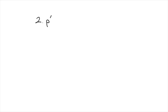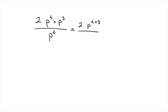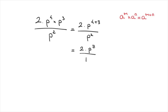Let's look at another example: simplify 2 times p to the power of 4 times p to the power of 3, all over p to the power of 2. It's best to work in steps. First, simplify the numerator — since everything is being multiplied, we get 2 times p raised to the power of 4 plus 3, all over p to the power of 2. This uses the multiplication rule: a^m times a^n equals a^(m+n), giving 2 times p to the power of 7 over p to the power of 2.